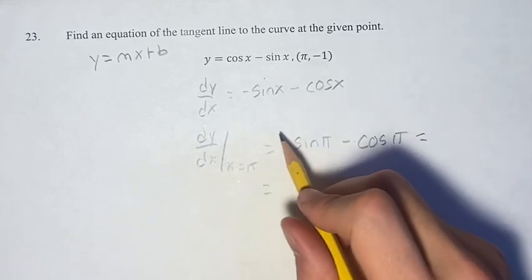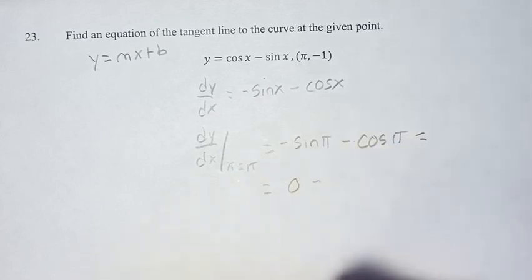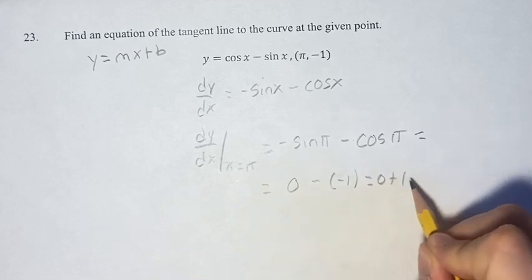Sine of pi is 0, so this is just 0. We have 0 minus cosine pi, which is negative 1. So 0 minus negative 1 is 0 plus 1, or just 1.